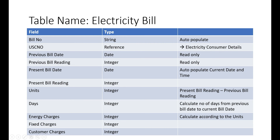SCN1 number is also a string. Name is a string — the consumer's name when first registering. Address also needs to be mentioned. Category, phases — these are electricity department terms. Load in kilowatts is stored for the meter. STR code and pole number are also included. This completes the first table: Electricity Consumer Details, which will hold five to ten consumer records initially.